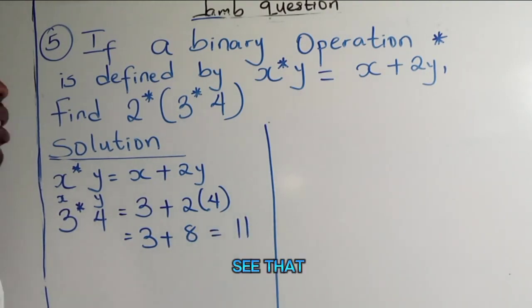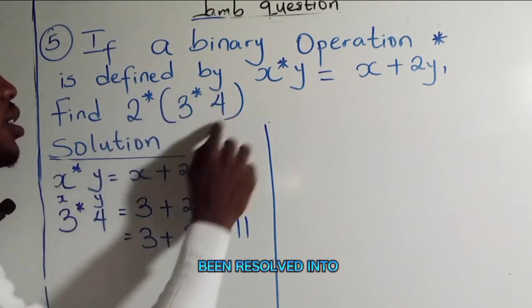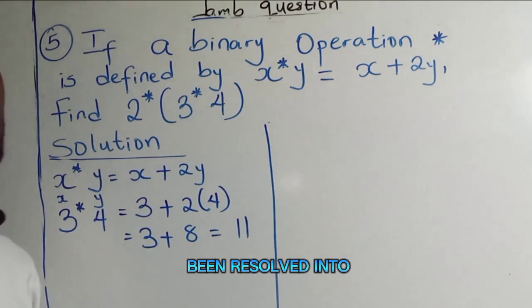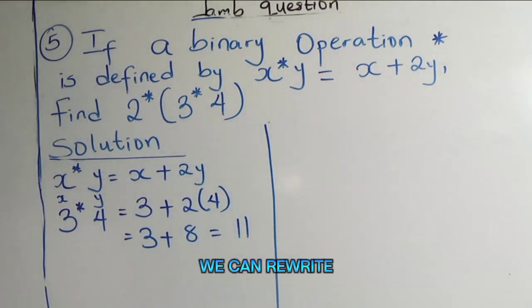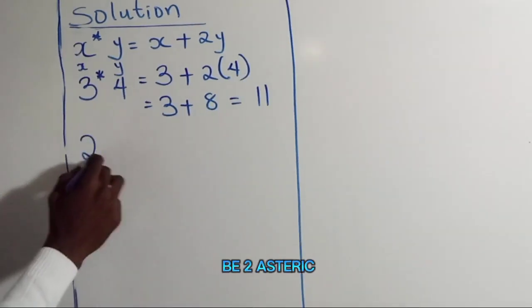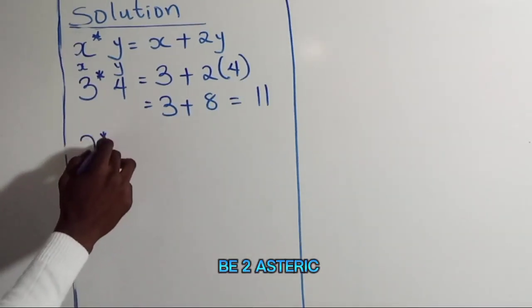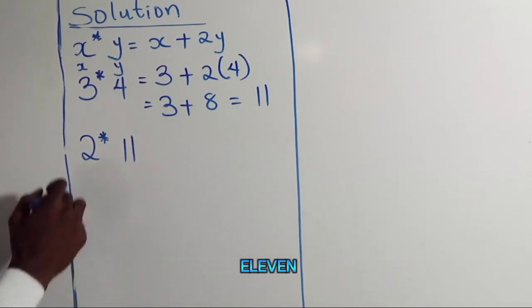Now you can see that this has already been resolved. We can rewrite the operation to be 2 asterisk 11.